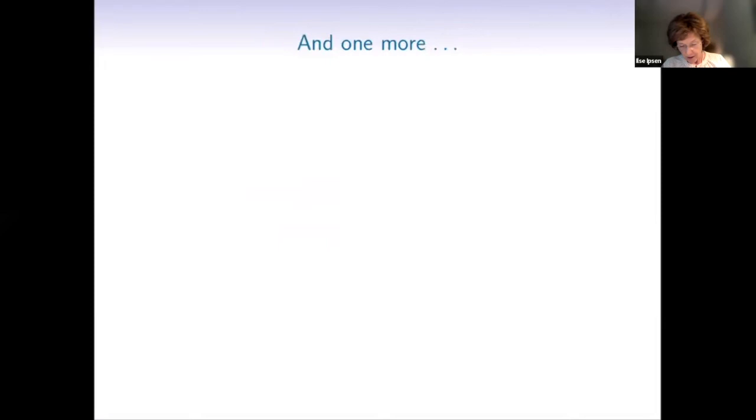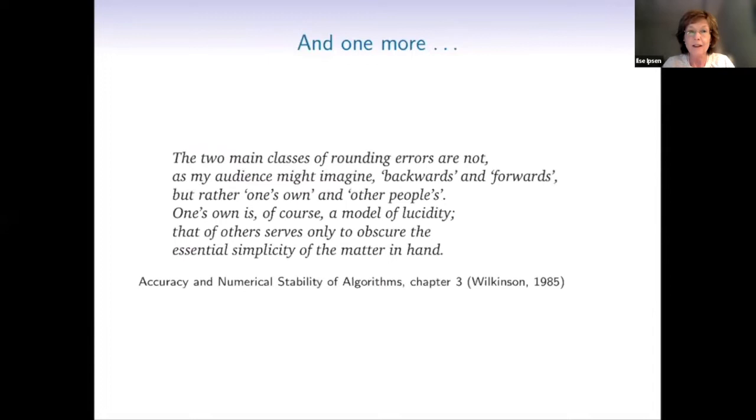Here's one from Cleave from more than 50 years ago, which is still valid to a great extent today: almost anything you can do with A inverse can be done without it. And one last one, which is due to Wynn and my favorite one: The two main classes of rounding errors are not, as my audience might imagine, backwards and forwards, but rather one's own and other people's. One's own is, of course, a model of lucidity. That of others is only to obscure the essential simplicity of the matter in hand. I totally agree, probably Nick too.